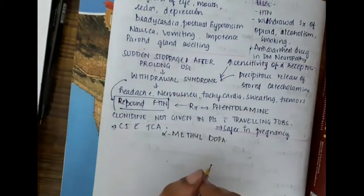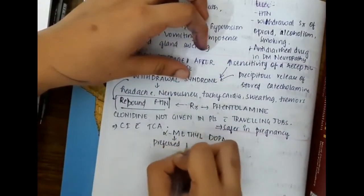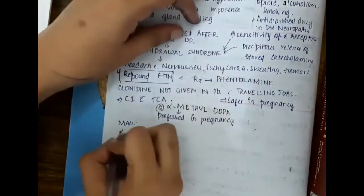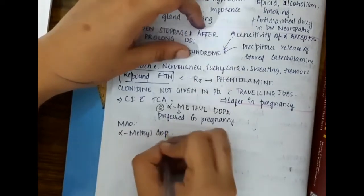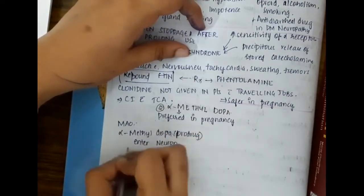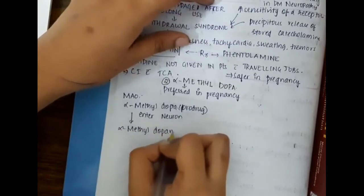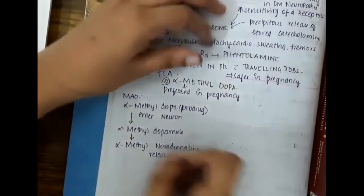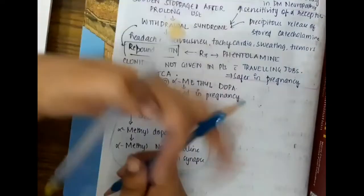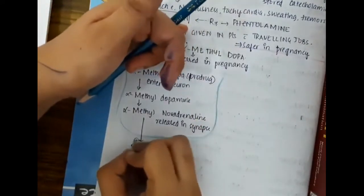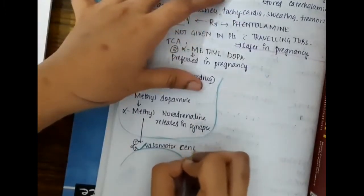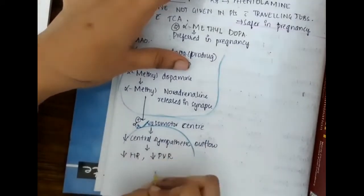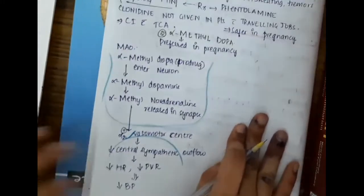The drug alpha-methyldopa is actually preferred in pregnancy. Alpha-methyldopa is a prodrug which enters the neurons. It gets converted to alpha-methyldopamine, which in turn forms alpha-methyl noradrenaline, which is released in synapses. This alpha-methyl noradrenaline activates the alpha-2 vasomotor center, decreasing central sympathetic outflow, decreasing heart rate and peripheral vascular resistance, thus decreasing BP.